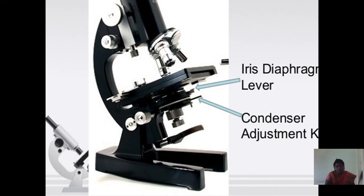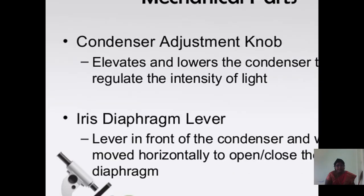The iris diaphragm lever and condenser adjustment are also mechanical parts. The condenser adjustment knob elevates and lowers the condenser to regulate the intensity of light. The iris diaphragm lever is positioned in front of the condenser and is moved horizontally to open or close the diaphragm.